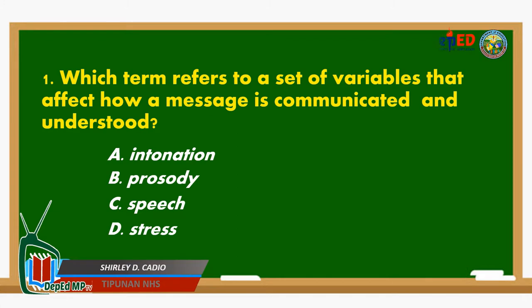Number 1. Which term refers to a set of variables that affect how a message is communicated and understood? A. Intonation. B. Prosody. C. Speech. D. Stress.